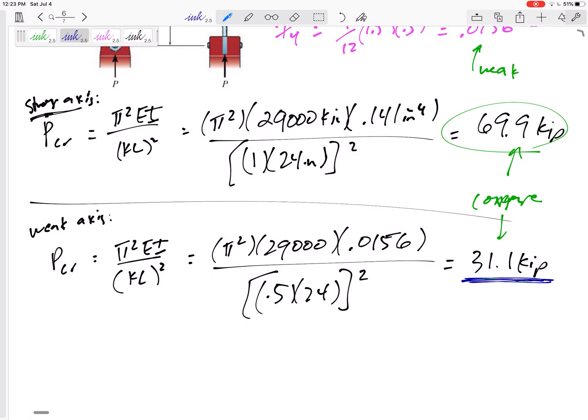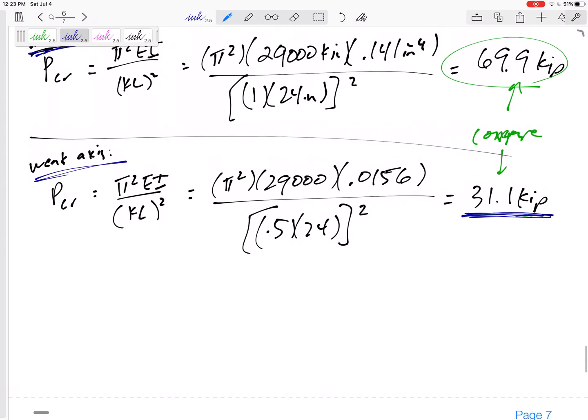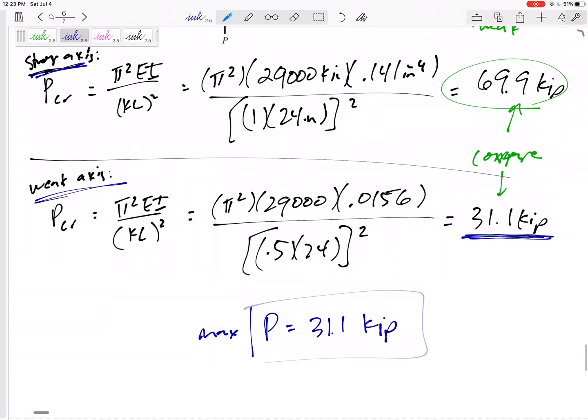Because I can't go above 31.1. If I go to 31.2, it has buckled. So it will not, in this case, buckle about this axis - it's always going to buckle about this axis because of the smaller force. So the maximum force P is 31.1 Kips.